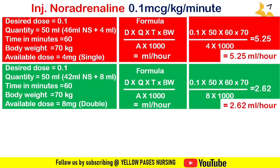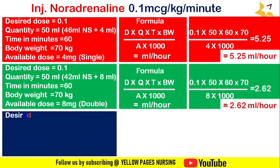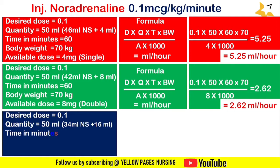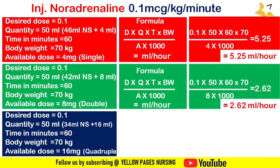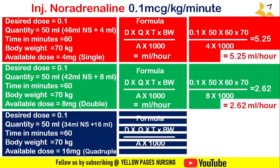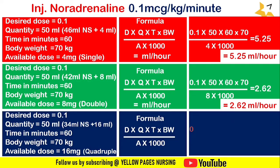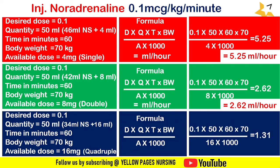For quadruple strength: desired dose = 0.1, quantity = 50 ml (34 ml normal saline + 16 ml noradrenaline), time = 60 minutes, body weight = 70 kg, available dose = 16 mg. Applying the formula gives the answer: 1.31 ml per hour.